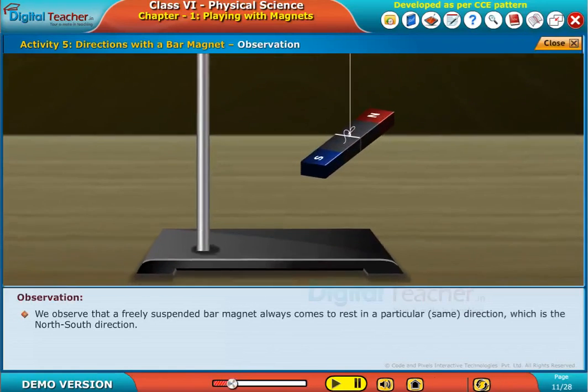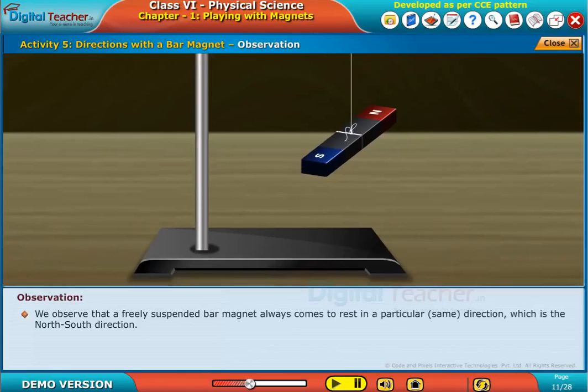We observe that a freely suspended bar magnet always comes to rest in a particular or same direction which is the north-south direction.